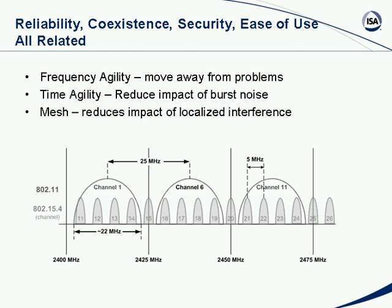The availability of frequency agility is important — if one channel has a problem, either an interferer or a multipath null, the channel can be changed and the problem avoided. In our approach to the MAC layer, ISA 100.11a offers the opportunity to move the slot around in time, which will reduce the impact of interference from burst noise or other potential interferers. It also offers the mesh we need, which reduces the impact of geographically local interference — you can route around an interferer. There's now a company that sells a product allowing you to map your Wi-Fi network around your microwave oven using a repeater to avoid that interference.